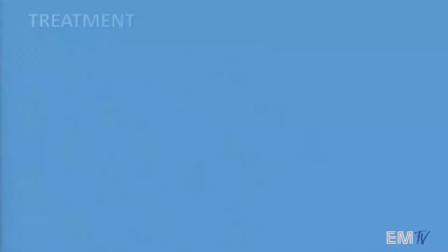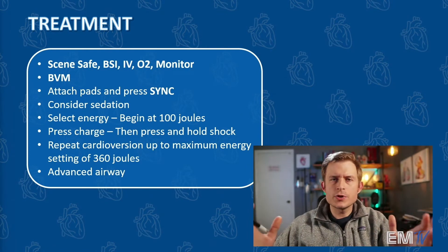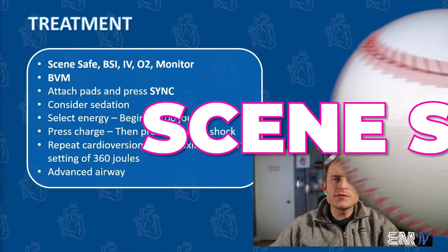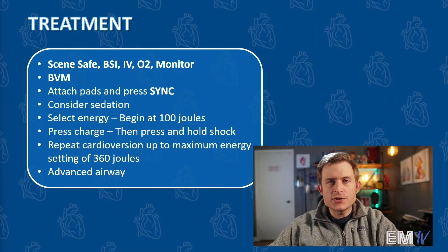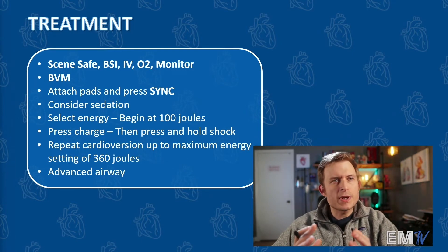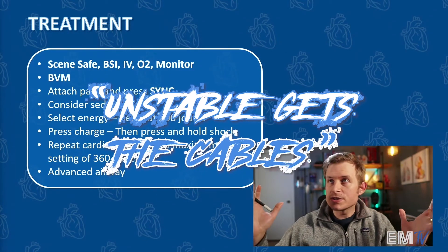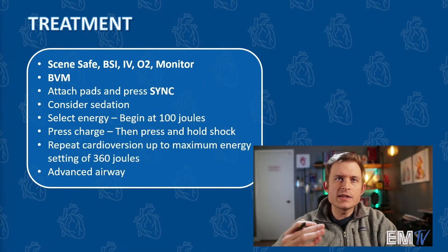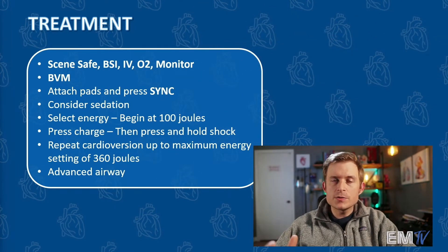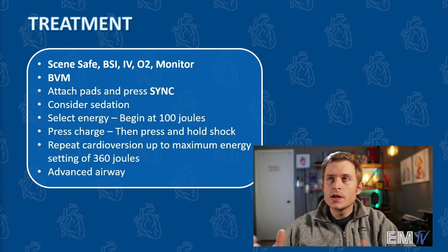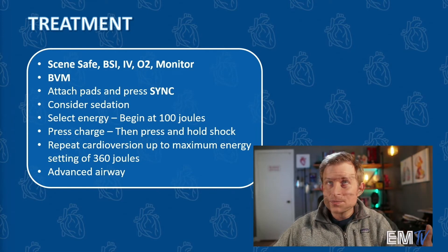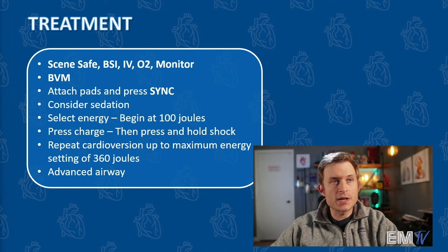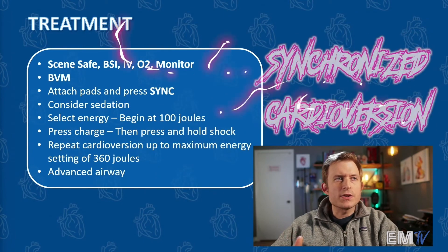Now let's look at the treatment. All Static Cardiology treatment will begin the same way by regurgitating the mantra: scene safe, BSI, IV, O2, monitor. We'll then ventilate the patient with a BVM using high-flow oxygen. And then because our patient is unstable — as the old saying goes — unstable gets the cables. We'll select the sync button on our monitor after attaching the pads, because we're going to use the synchronized cardioversion function. We would consider sedation, but this patient is unresponsive so sedation is already taken care of — though it makes you a bad person if you don't at least consider it. After hitting the sync button, select our energy. For synchronized cardioversion, starting at 100 joules is a safe energy setting. We'll press charge and then press and hold the shock button to deliver the energy, repeating cardioversion as necessary up to a maximum of 360 joules.